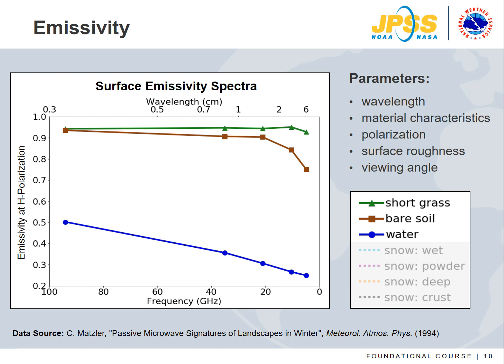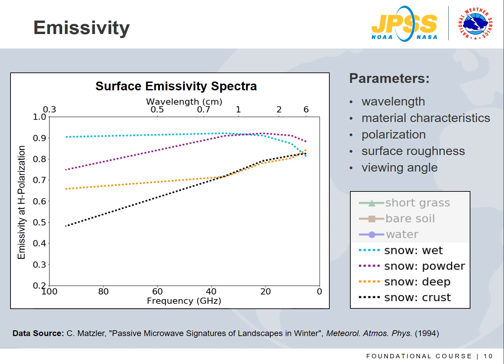The surface emissivity spectra show that bare soil and vegetation such as short grass are the strongest emitters of microwave energy and will appear closest to their physical temperatures. Water surfaces are the weakest emitters, with emissivity values less than 0.5, and will appear much cooler than their physical temperatures — in contrast to infrared, where water has an emissivity near 1. Snow emissivity in the microwave is variable and depends on depth, temperature, wet-dry state, and water equivalent of the snowpack. Ice has a different structure than liquid water, so emissivity changes significantly with transformation of snowpack over time.